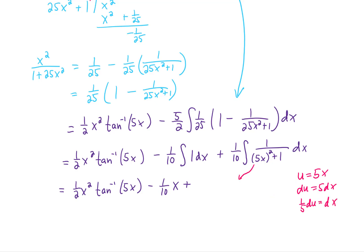Completing that u substitution just brings a factor of 1/5th outside of the integral, leaving us with 1/50th times the inverse tangent of u, which was 5x in the first place.